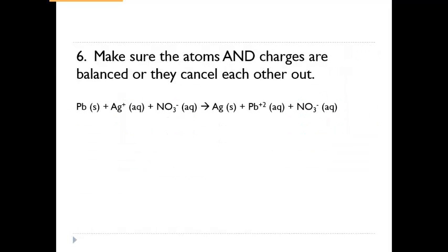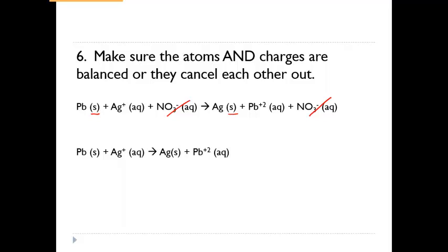You also want to make sure that atoms and charges are still balanced. In this next example, we have a solid lead and solid silver, so we can't cross out anything that is solid — only substances that are aqueous on both sides can be spectators. The Pb²⁺ is aqueous on both sides and the NO₃⁻¹ is aqueous on both sides, so we cross those out. We're left with just the solids and the aqueous ions that didn't cancel.